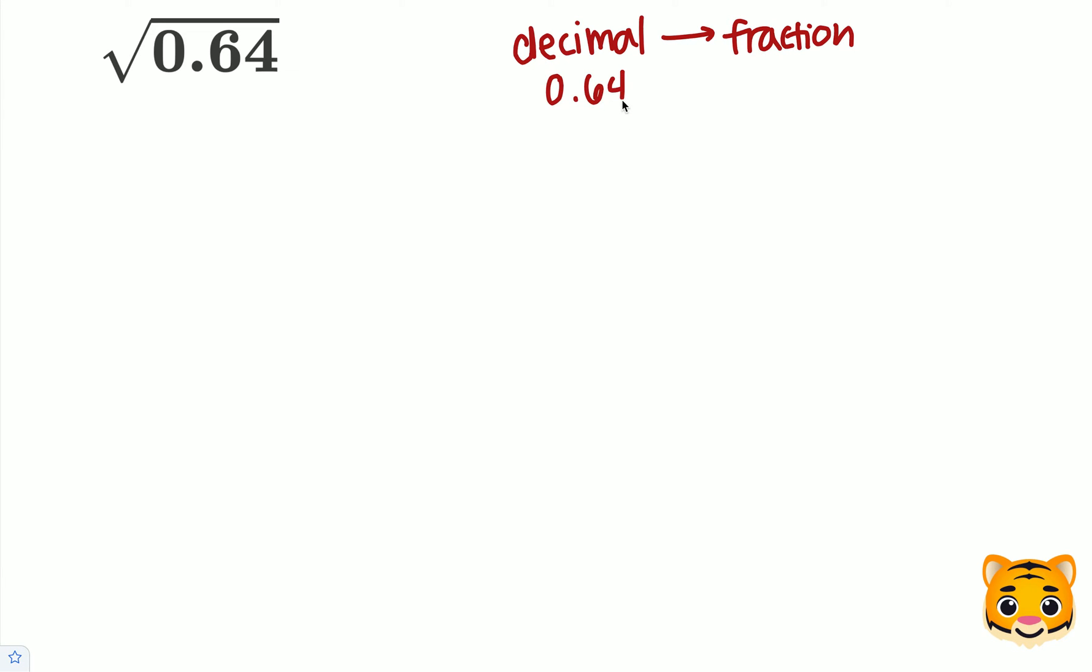In this case, our decimal is 0.64. To turn this into a fraction, we want to look at our furthest decimal place value. That's in the hundredths place. So we can rewrite 0.64 as 64 over 100.